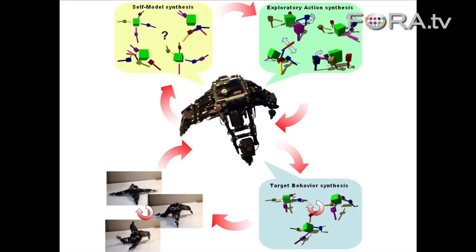Motor babbling — it begins by babbling, just moving the motors in a random way. Then it collects all the sensory information and forms hypotheses about what it might be. What you can see at the top left are all the hypotheses — different shapes, different self-images it came up with that explain what it might be. These are all models that explain its sensations, the relationship between actuation and sensation. You'll know that most of what the robot is imagining it is are wrong, but as far as the robot knows, these are all valid hypotheses.